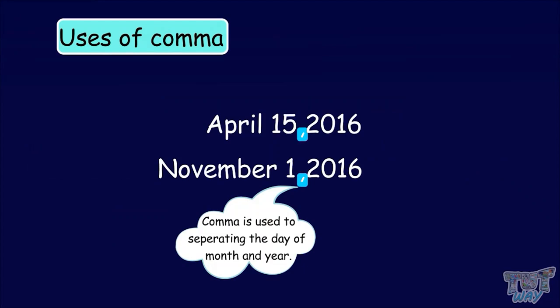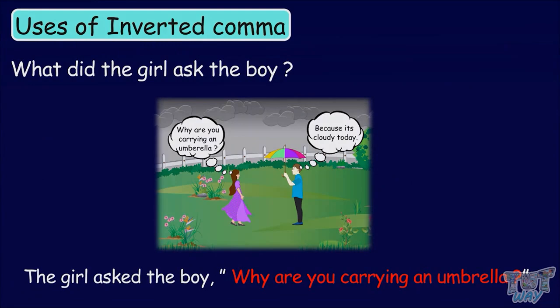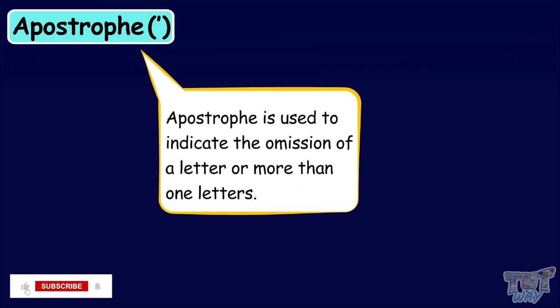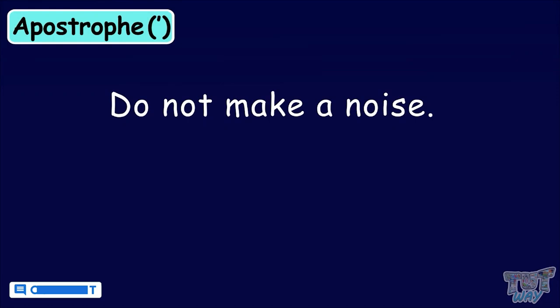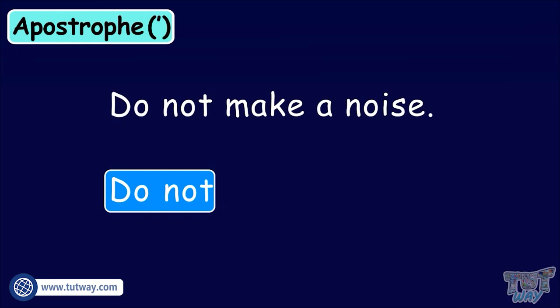Now, it's time to learn the use of apostrophe. Apostrophe is used to indicate the omission of a letter or more than one letters. For example, Do not make a noise. Here, we can make a short form of do not, and for that we can omit the o of not and use an apostrophe in its place. So the sentence will become, Don't make a noise.